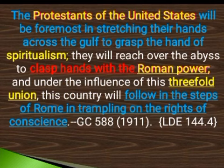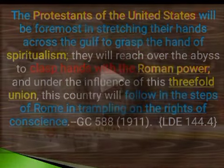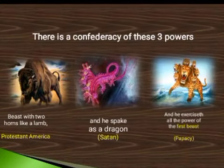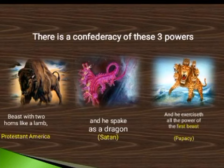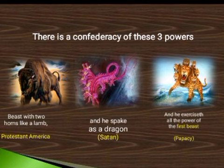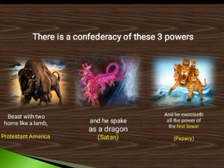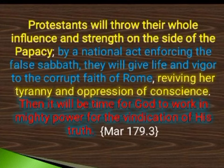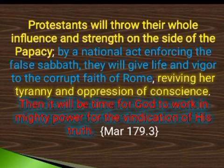There is a confederacy of three powers which will finish the work of deception: the beast with two horns like a lamb — Protestant America — speaking like a dragon who is Satan, and exercising the power of the first beast, the Papacy. So Protestant America, Satan, and Papacy will join hands together in the last struggle for supremacy on the earth. Protestants will throw their whole influence and strength on the side of Papacy. By a national act of enforcing a false Sabbath, they will give life and vigor to the corrupt faith of Rome, reviving her tyranny and oppression of conscience.